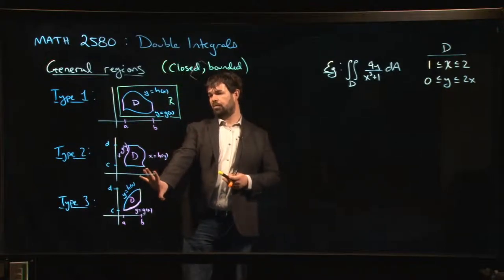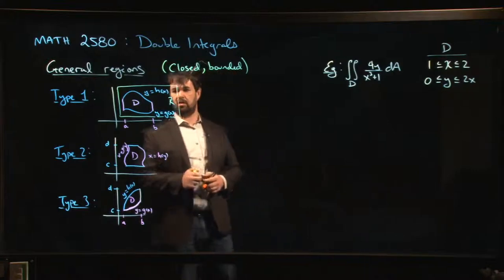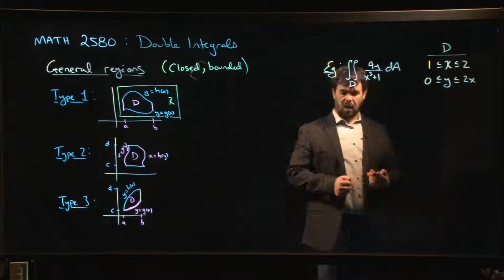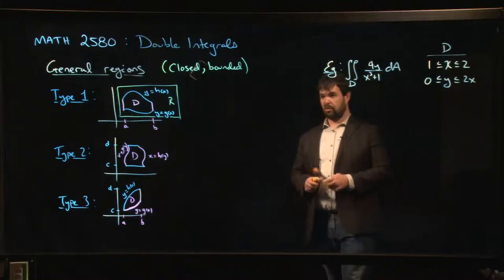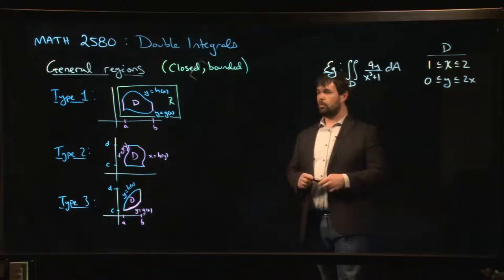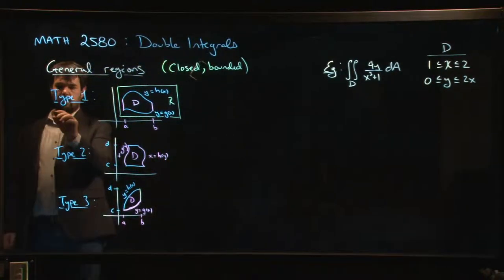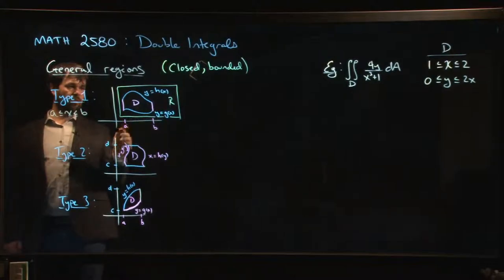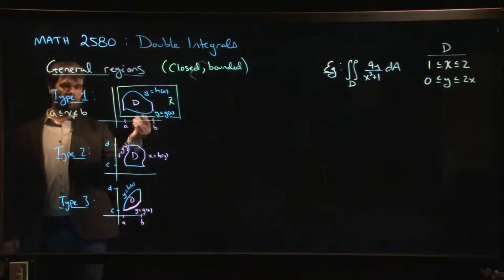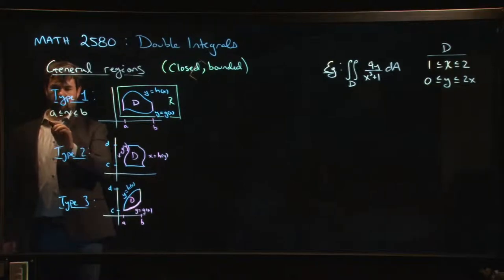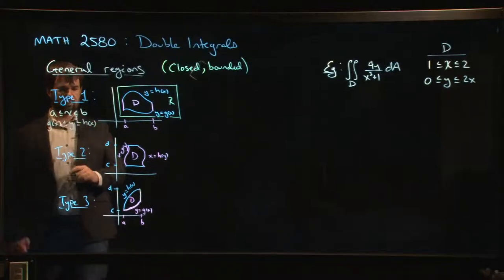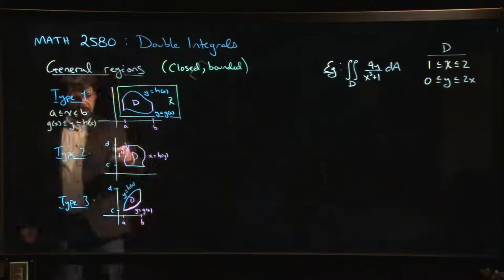There are three types of regions you encounter when doing double integrals in X and Y — we'll look at other regions later with polar coordinates and general change of variables. The first type, Type 1, is a region where X runs between fixed values from A to B, but Y is bounded by variable values — the bounds for Y depend on X. So Y runs from G of X up to H of X.